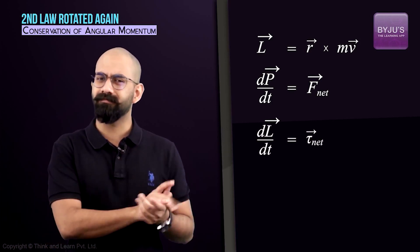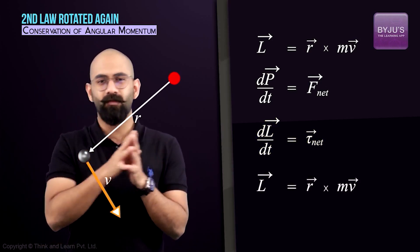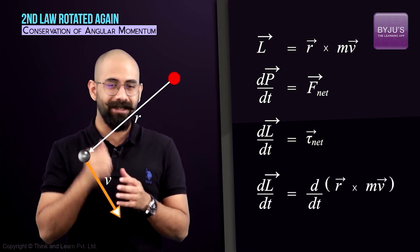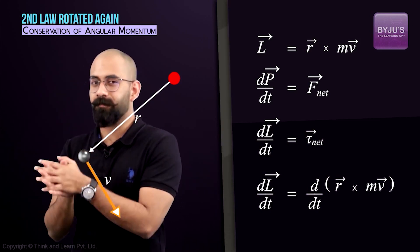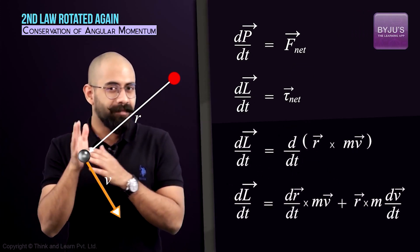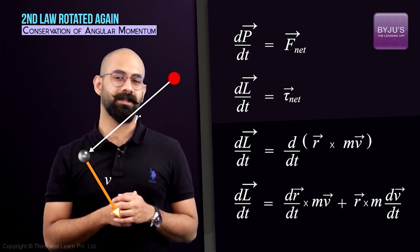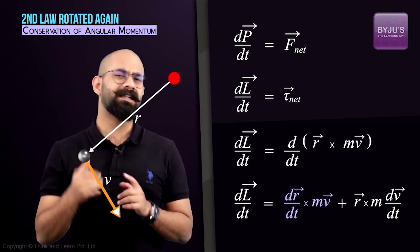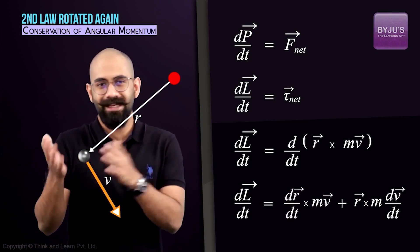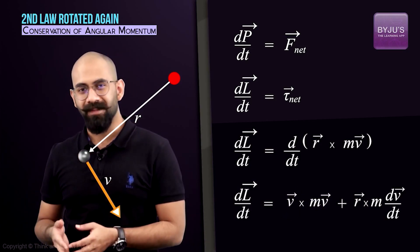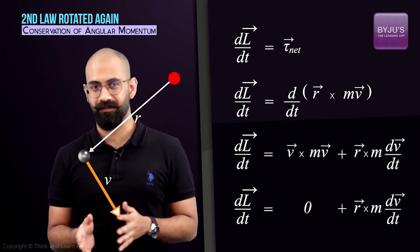Let's verify that. L equals r cross mv, so dL/dt equals d/dt of (r cross mv). Using the product rule for cross products, this equals dr/dt cross mv plus r cross m·dv/dt. The first term is dr/dt cross mv, and since dr/dt is just v, this becomes v cross mv, which equals zero because both vectors are parallel.